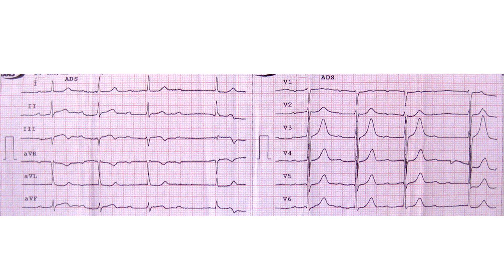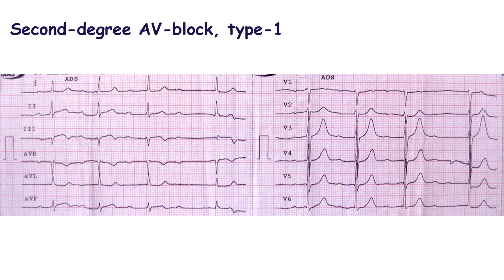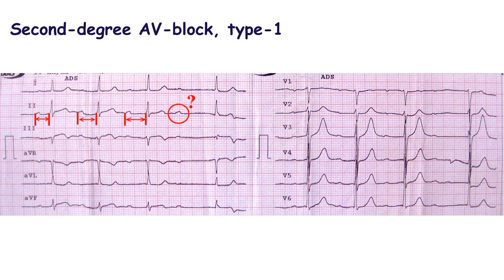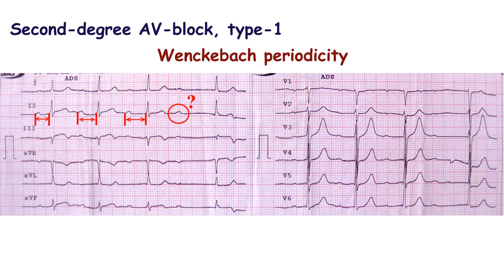It should be assumed that this is a second degree type I atrioventricular block, which is characterized by gradual prolongation of the PR interval up to the non-conducted P wave. The PR interval following the non-conducted P wave is the shortest, and then it gradually prolongs to the next non-conducted P wave. This is called Wenckebach periodicity.